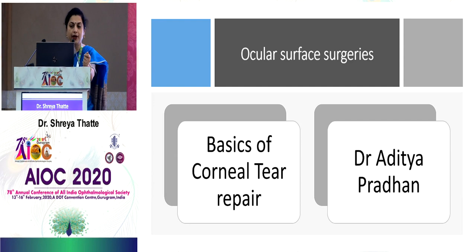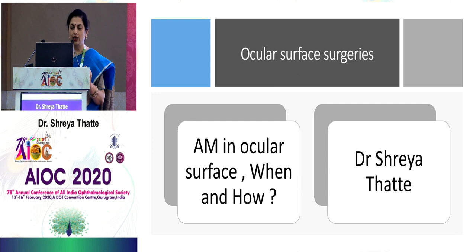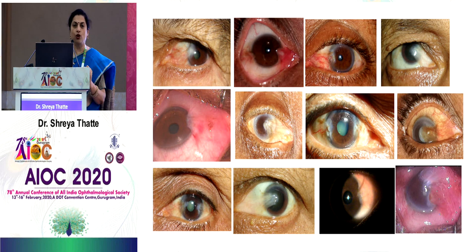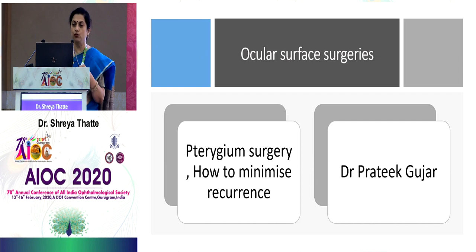After corneal tear repair, I will cover how amniotic membrane helps in ocular surface pathologies. Next, Pratik Gujar will talk about how to minimize recurrence in pterygium — we see regressive, progressive, double, grade 3, or pupillary-margin-involving pterygium. Dr. Gautam Parmar will discuss patch grafts in corneal perforations, and Dr. Tuhin Chaudhary will address total stem cell loss. I invite Dr. Pratik Gujar and all speakers to the dais.